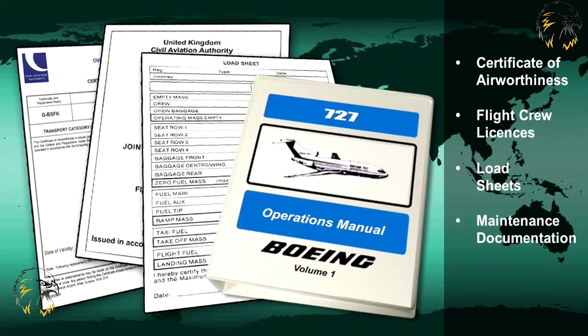This completes the lesson on the main duties of the ICAO member states. Remember that essentially the duties of the member states are to comply with the standards and recommended practices set out in the annexes to the Convention.